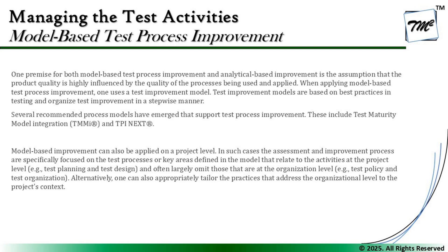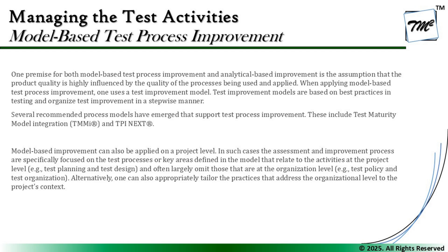At the project level, the key areas defined in the model relate to activities such as planning and design, and largely omit organizational-level concerns like policy and test organization structure. These models mainly focus on key test process activities within a project — like test planning, defining the test strategy, and what is best suited for that particular project. Alternatively, one can also appropriately tailor practices that address the organizational level to the project context.